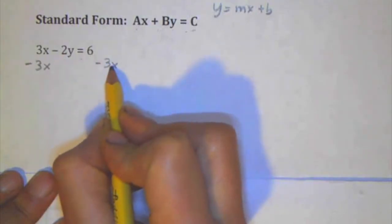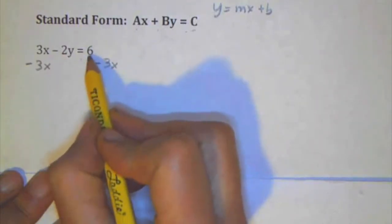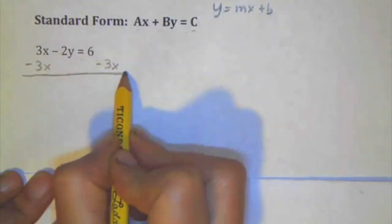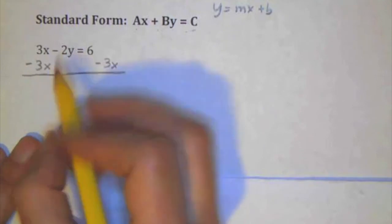I'm going to offset it a little bit on the other side because I don't want to put it right below and think I'm going 6 minus 3x, because these are different. These are not like terms, so I'm going to put them apart from each other.